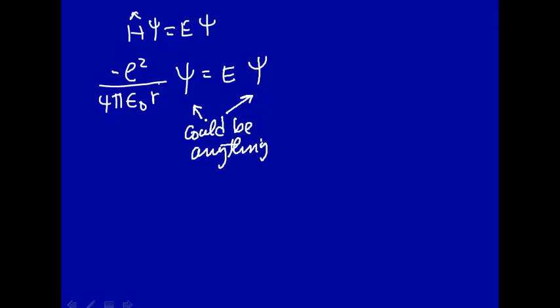And in fact, if you just divide through by the wave function, you'll get the energy is equal to minus e squared over 4 pi epsilon naught r. And this is just the Coulombic energy.